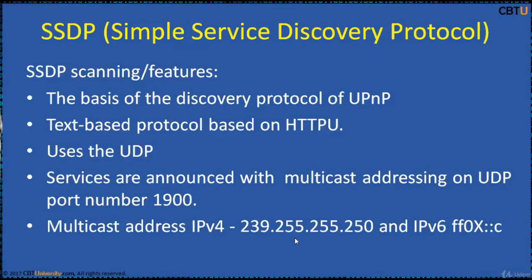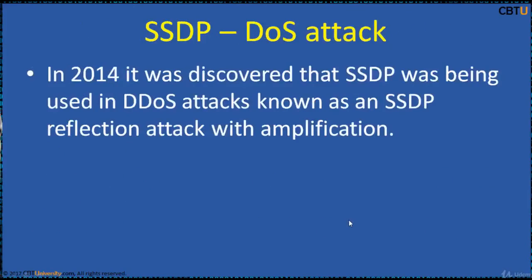Services are announced by the hosting system with multicast addressing on UDP port number 1900. In IPv4, the multicast address is 239.255.255.250, and SSDP over IPv6 uses the address FF0X::C for all scope ranges, indicated by the X.